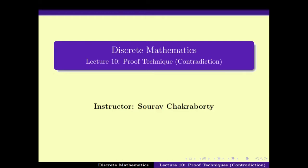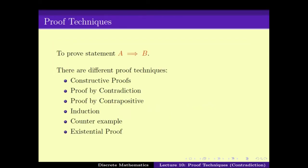Welcome everybody to the third week of discrete mathematics. In this week we will be continuing our study of proof techniques, and in particular we will look at the proof techniques of contradiction and contrapositive. To recall, we were dealing with techniques of proving a statement like A implies B. There are many proof techniques that can be applied, namely constructive proof, proof by contradiction, contrapositive, induction, counterexample, existential, etc.